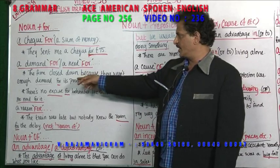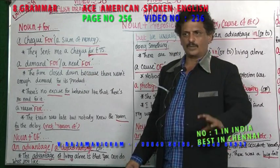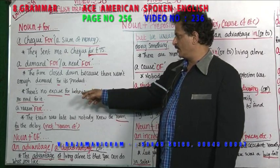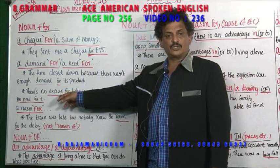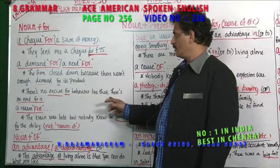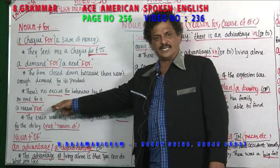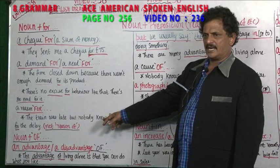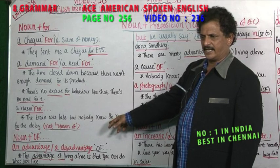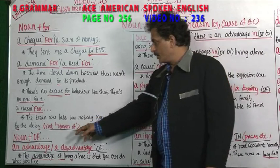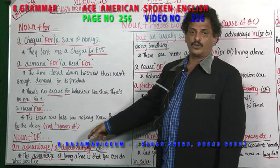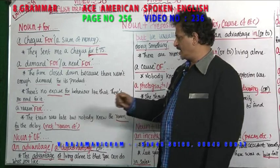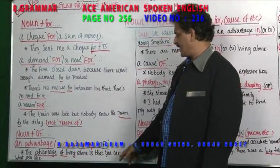The firm closed down because there wasn't enough demand for its product. There is no excuse for behavior like that. There is no need for it. There is no excuse for — the reason for. The train was late but nobody knew the reason for the delay.